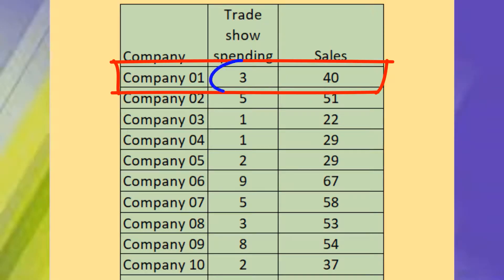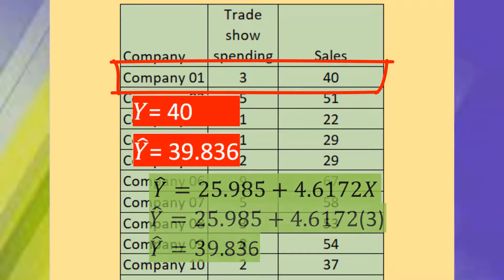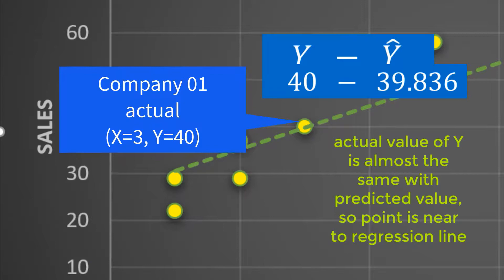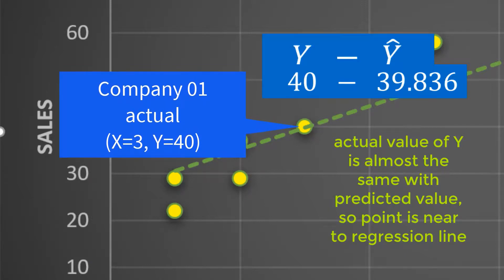Company 0.1 has also the same value of x of 3 million. Company 0.1 has actual y value of 40, which is almost the same with its predicted value of 39.836. This is the reason why the point of Company 0.1 is near the regression line.